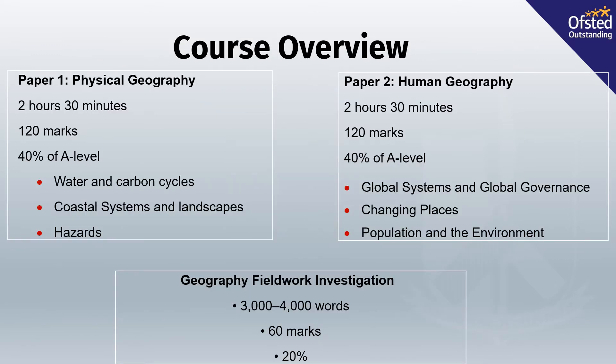Geography A-Level comprises three different elements. Paper 1 is physical geography, which is worth 40% of the A-Level. It is a 2 hours and 30 minutes exam sat at the end of year 13, worth 120 marks. Within this paper, it is comprised of three different units.